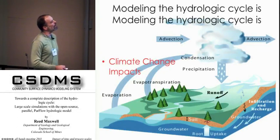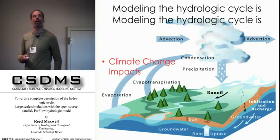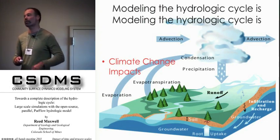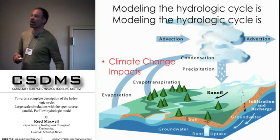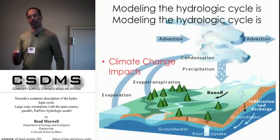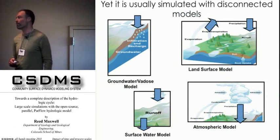The idea is that we have the coupled hydrologic cycle, which is not anything really new to anybody in this room. This is important for a lot of different reasons: climate change impacts, biogeochemical cycles, nutrient cycles. And what we tend to do is take all of these coupled processes and model them in a disconnected fashion.